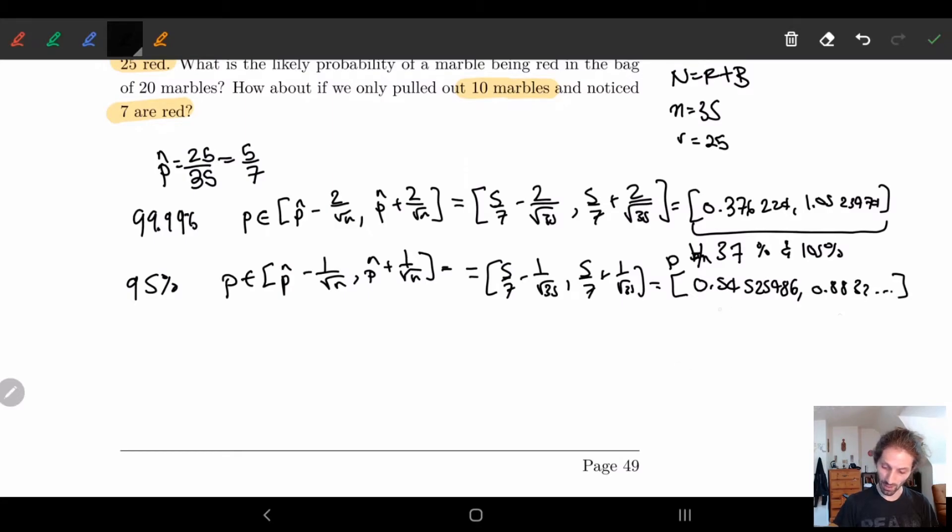I guess I don't need that big of a thing. So basically what we're saying with 95% chance, the actual probability is between 54% and 88% or 89%.